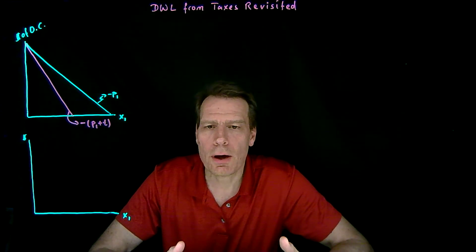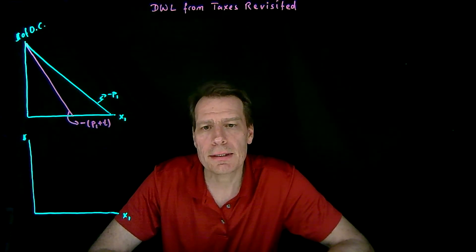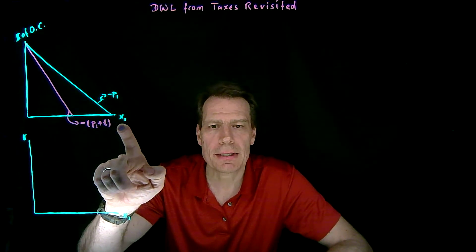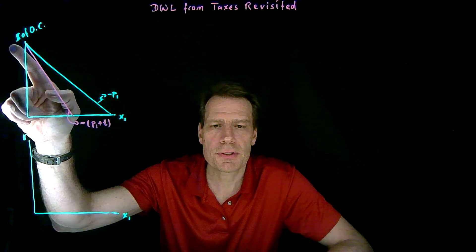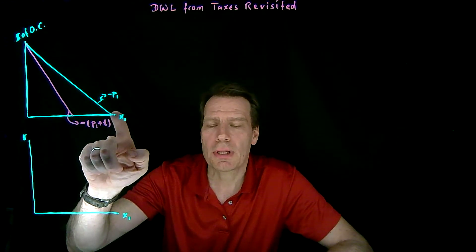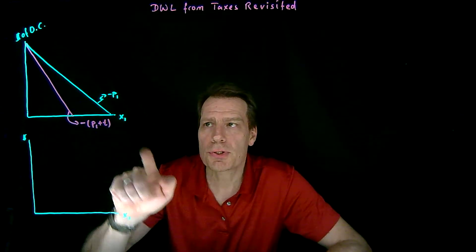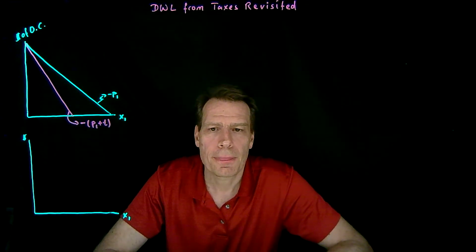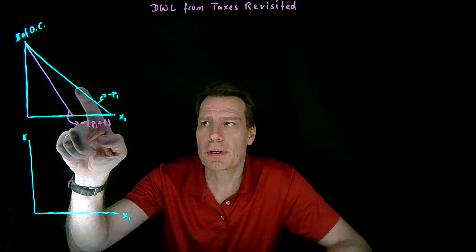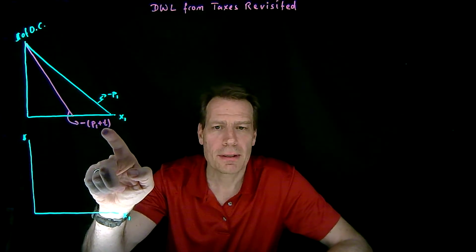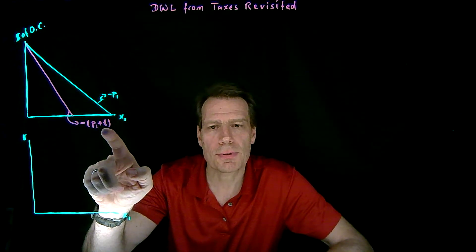We've previously illustrated the deadweight loss from a distortionary tax in the consumer diagram. We started with the good x1 that's going to be taxed, modeled dollars of other consumption as a composite good on the vertical axis, and started with an original untaxed budget constraint where the slope is minus p1, since the price of dollars of other consumption is just a dollar. Then when the tax is imposed, the price of the good increases, so now the price is p1 plus the increase due to the tax.